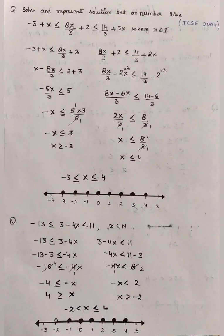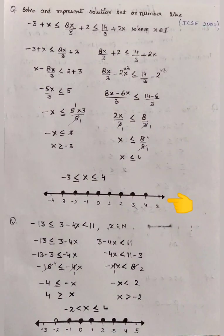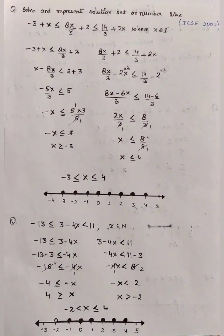Now we merge both solutions, writing the smallest number first: x ≥ −3 and x ≤ 4. To represent the solution on the number line, we mark −3 and +4 with dark circles and highlight all the integers lying between these two values. That's the solution.